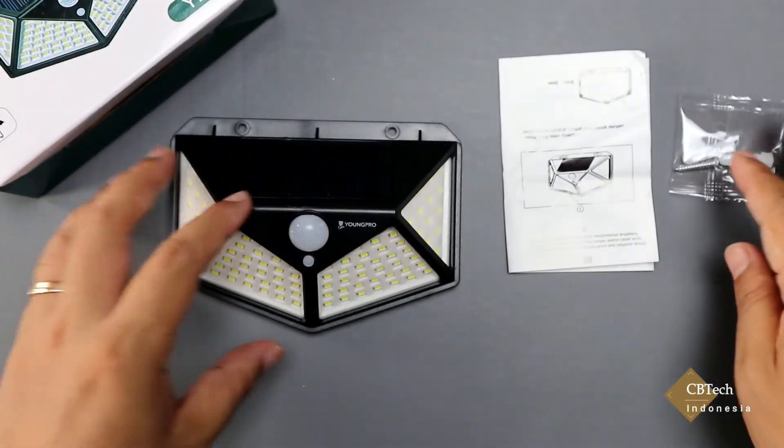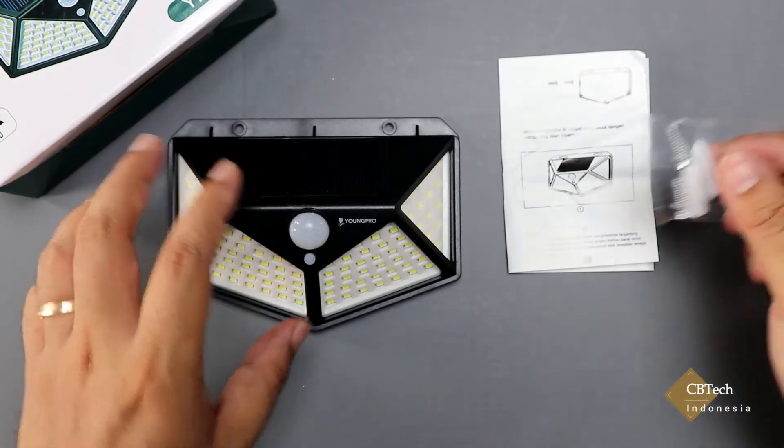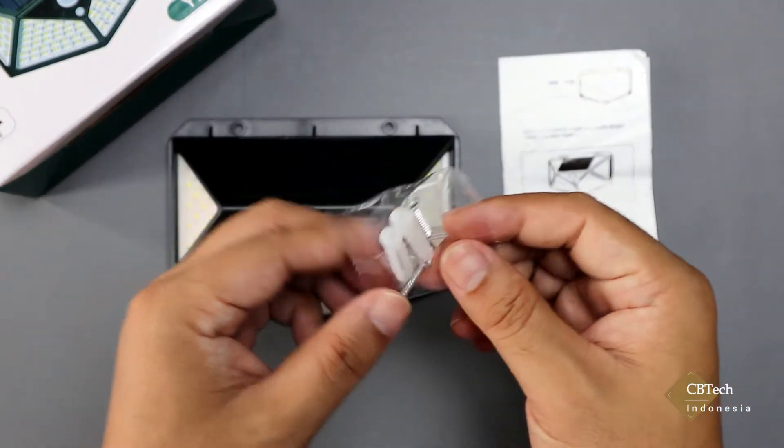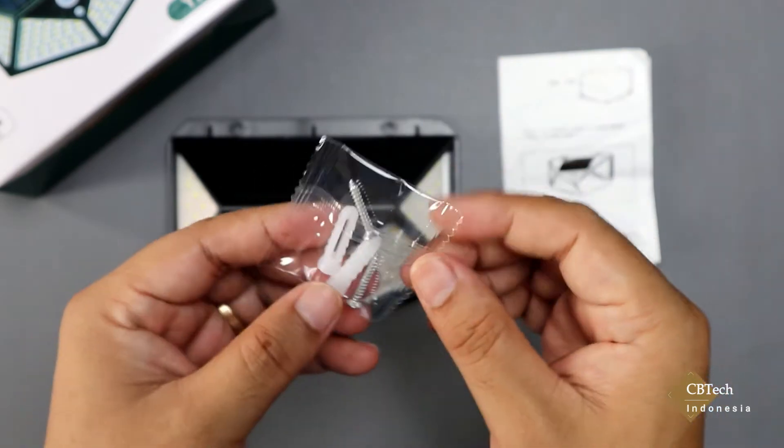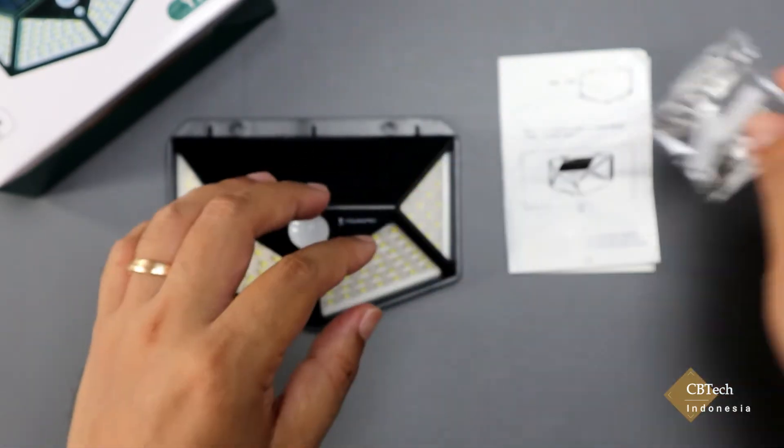Nah baik jadi inilah yang kita dapatkan dalam paket penjualannya. Pertama kita mendapatkan baut berikut dengan visornya. Jadi tinggal dipasang aja, tidak perlu lagi kita mencari baut berikut dengan visor. Tinggal dipakai.